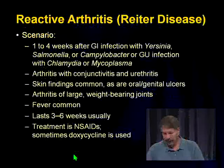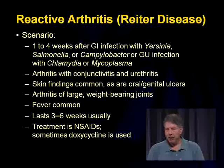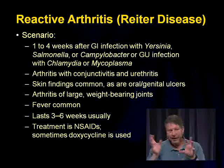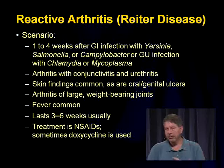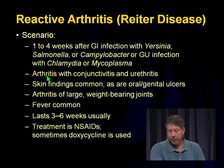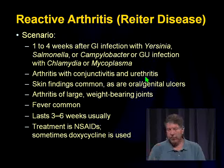Reactive arthritis (formerly Reiter disease — we've gotten away from that name) is a favorite for the test. The key: there's going to be a history of a GI or GU infection within the last one to four weeks, followed by arthritis, conjunctivitis, and urethritis — these three things. They commonly have oral or genital ulcers. Usually it's arthritis of a big joint like a hip. Fever is common. It lasts three to six weeks; treat with NSAIDs, sometimes doxycycline.